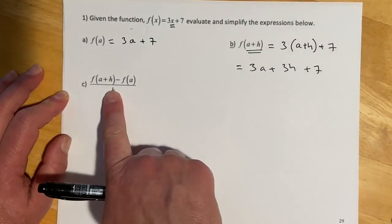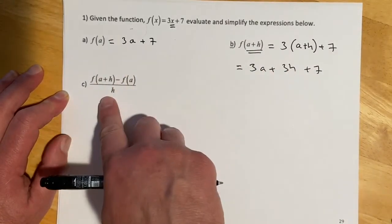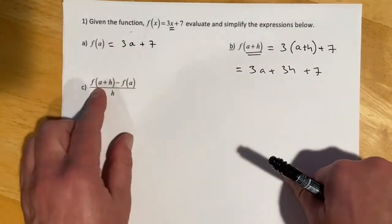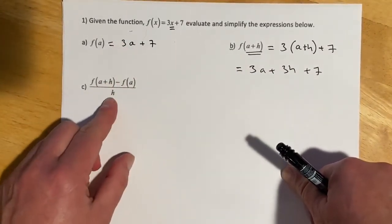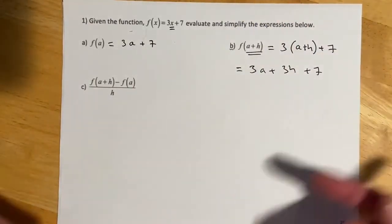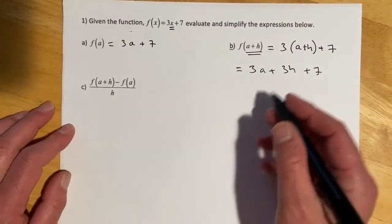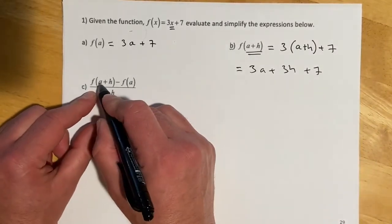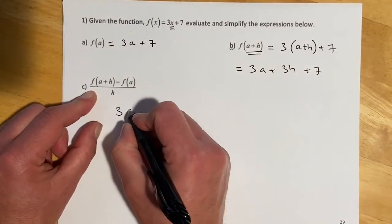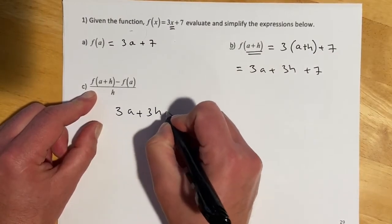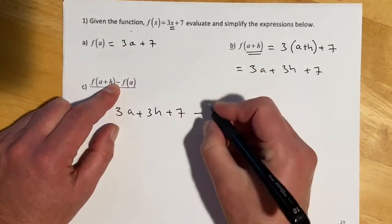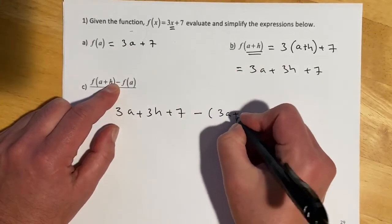And then part c of this is putting these two things together and putting it over h. So what they're having you do is evaluate the two pieces of the difference quotient and then put it all together in the problem. In the next one, it'll just be do the difference quotient, do this. So here, we're going to go f of a plus h. That was this expression. So 3a plus 3h plus 7 minus f of a. That's this, 3a plus 7.